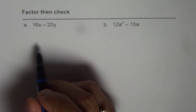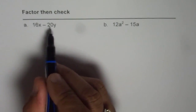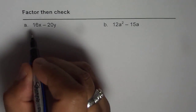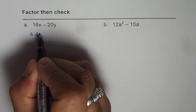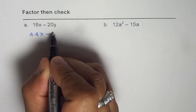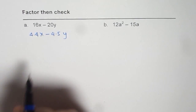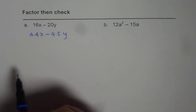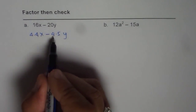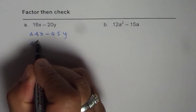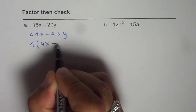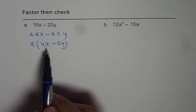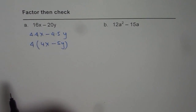Between 16 and 20, you can write down the factors and figure out what is the greatest common factor. 16 could be written as 4 times 4, and then we have x. 20 could be written as 4 times 5, and then we have y. As you can see, 4 is the greatest common factor, so we can factor out 4. If we do that, we are left with 4(4x minus 5y), which becomes the factored form of the given expression.